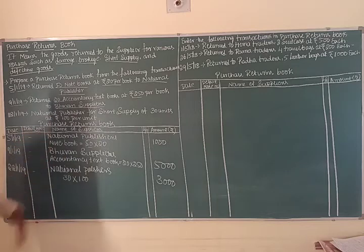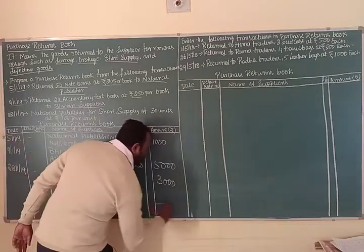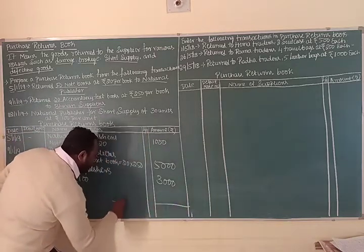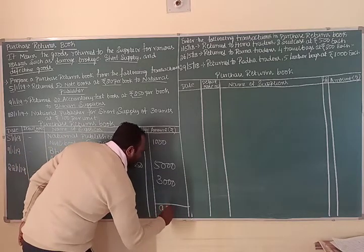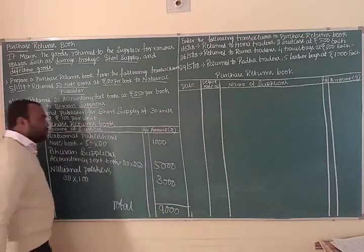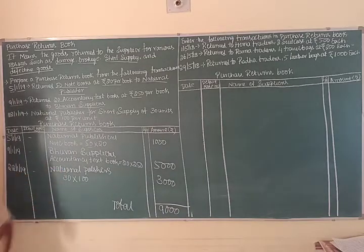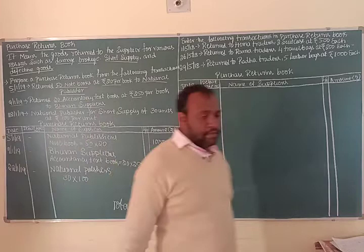This problem has only 3 transactions. Finally, we get the total. The total of the Purchase Returns Book is Rs. 9,000. Next problem.